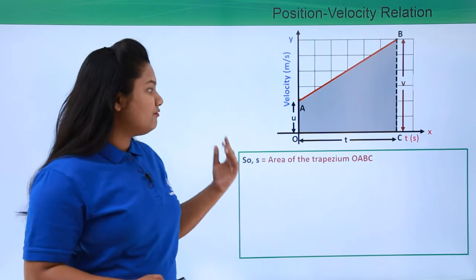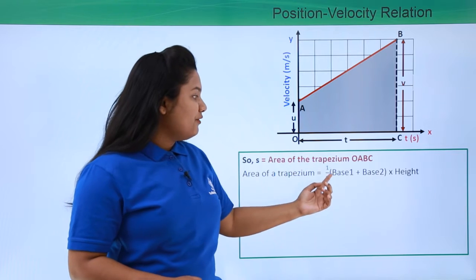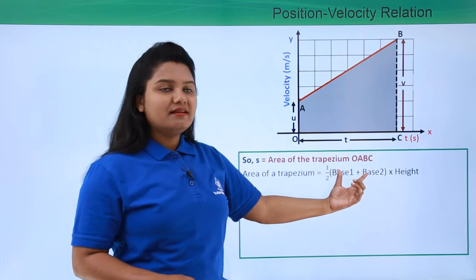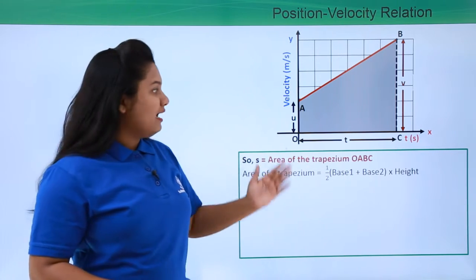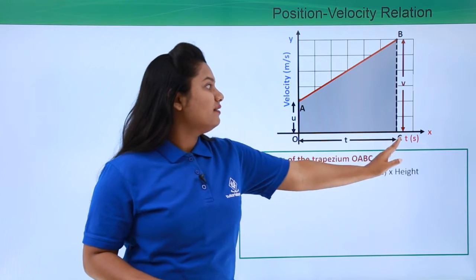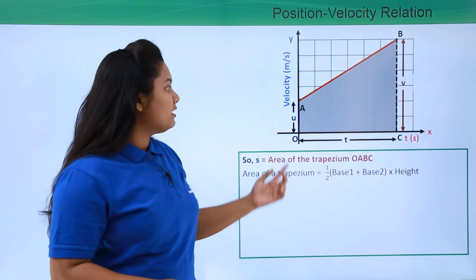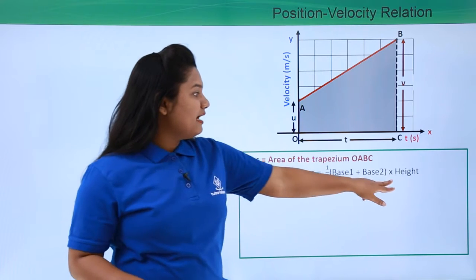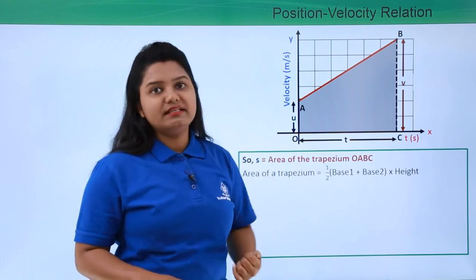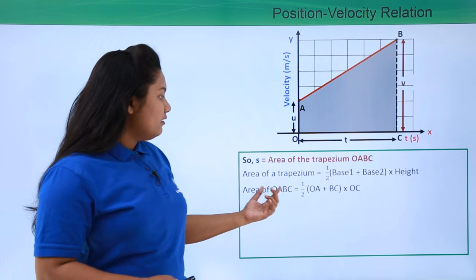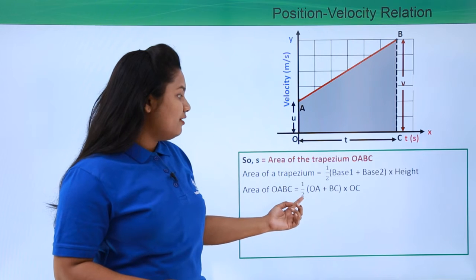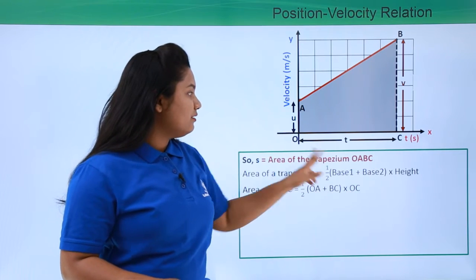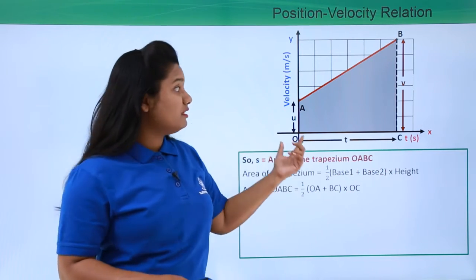The area of a trapezium formula is: half into (base one + base two) into height, where base one and base two are the two parallel sides of the trapezium. Here the two parallel sides are OA and BC respectively, so we take OA as base one and BC as base two. The height of the trapezium is given by OC.